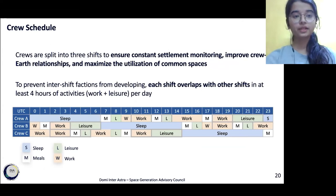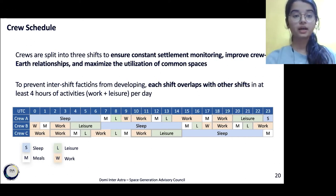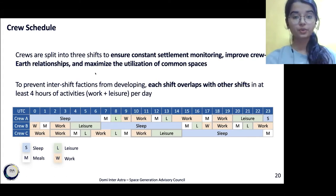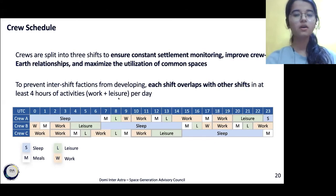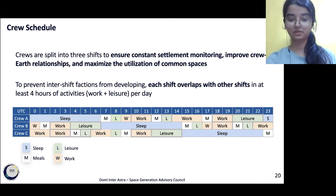We've looked at governance at the macroscopic level. Moving to the microscopic level, we have the crew schedule. The crew is split into three shifts that ensure constant settlement monitoring, improve the crew-Earth relationship, and maximize utilization. What we've tried to highlight is the importance of maintaining schedules while actively ensuring leisure activities are conducted for both crew and tourists.